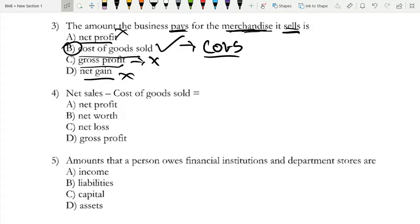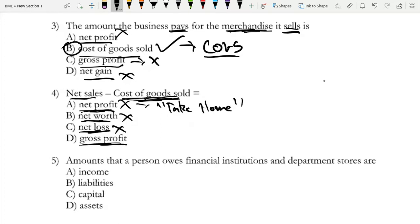Question four: net sales minus cost of goods sold equals? Net worth is assets minus liabilities, so not that. It's not net loss because you'd have to account for more factors. It's really between net profit or gross profit. You're not including taxes and other factors yet, so it's not net profit. Net is the take-home money you actually keep. The answer is gross profit.